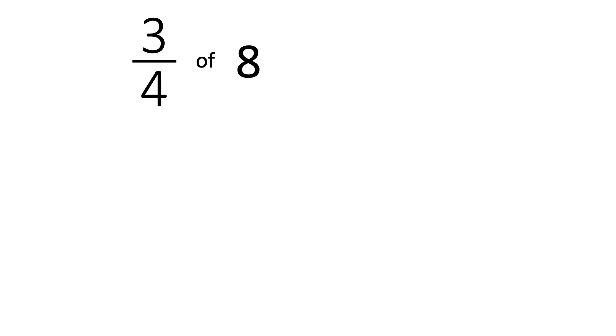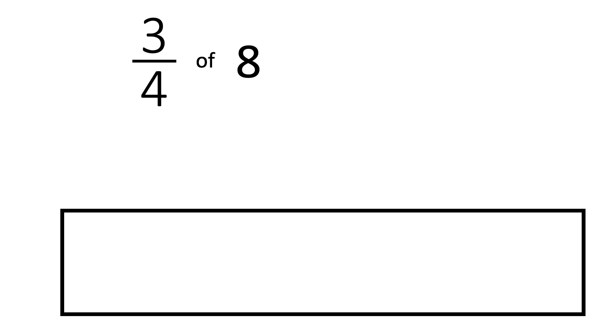So, let's look for three quarters of eight. We'll start with our whole, and our denominator tells us it's been split into four equal pieces. And our whole amount is eight. So let's get eight counters. One, two, three, four, five, six, seven, eight.